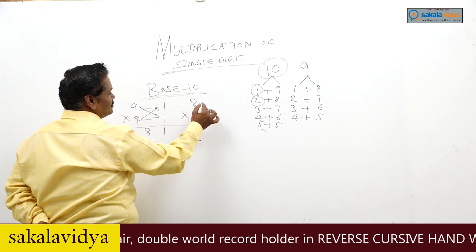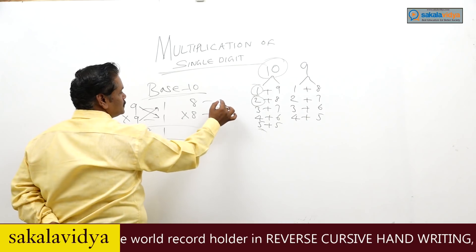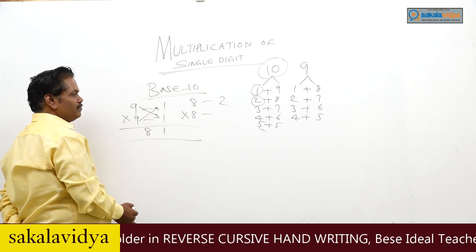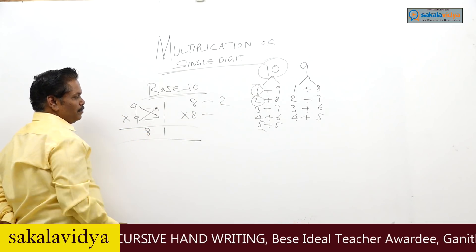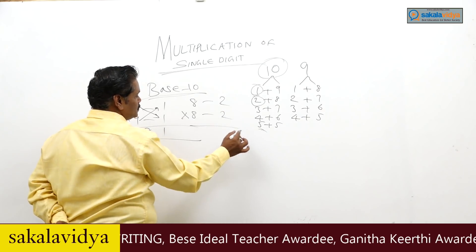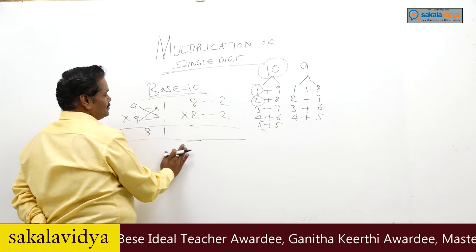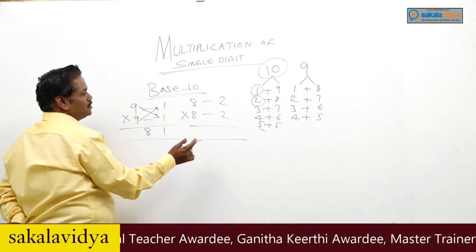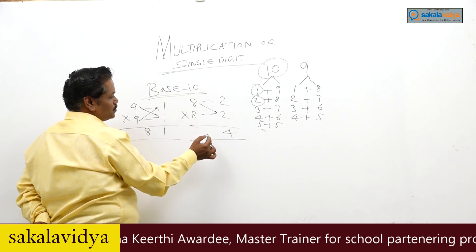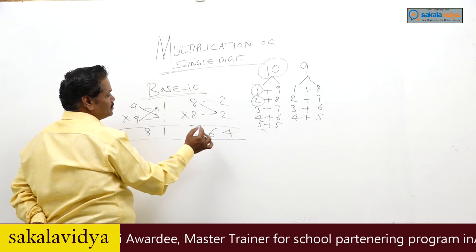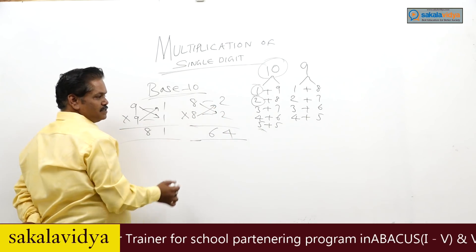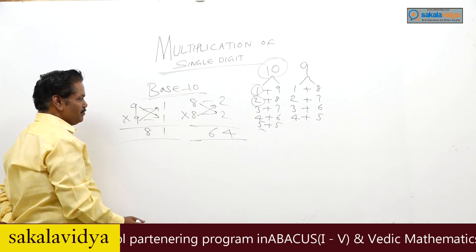8 into 8: complement of 8 is 2, and again complement of 8 is 2. 2 into 2 is 4. 8 minus 2 is 6, or 8 minus 2 is 6. So 8 into 8 is 64.